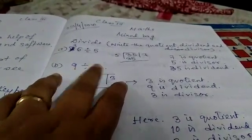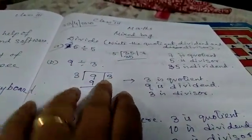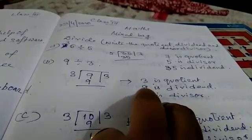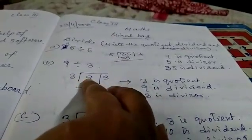Similarly, 9 divided by 3. 3×3=9. So 3 is the quotient. 9 is the dividend and 3 is the divisor.